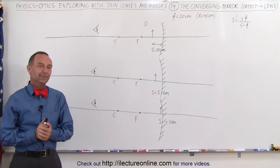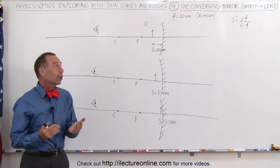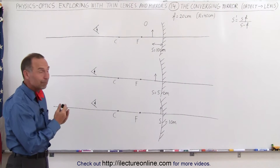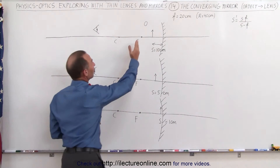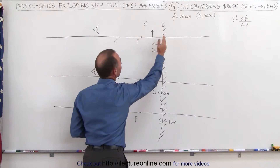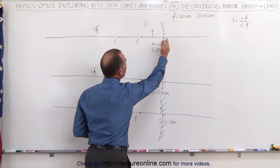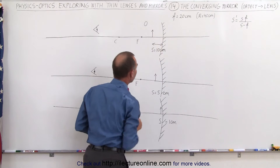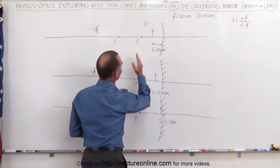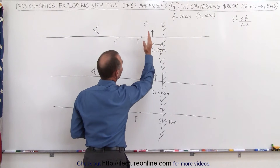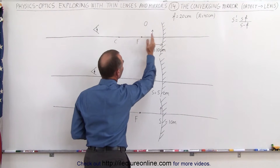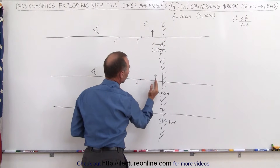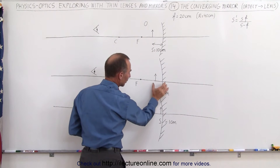Welcome to ElectronLine. In this video we're going to take the object and place it between the focal point and the mirror. Notice that this is a converging mirror and first we're going to place it at the halfway point between the focal point and the mirror. Then we're going to move it closer and closer.